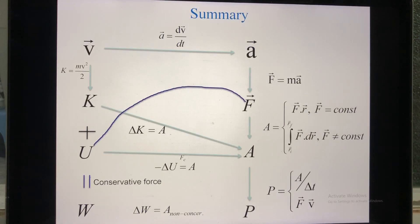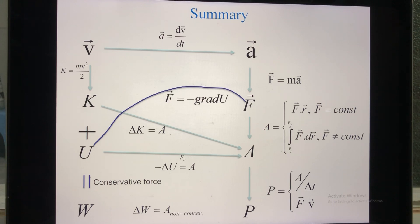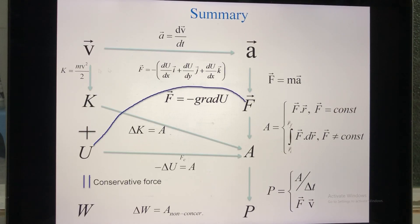In conclusion for this video: the important relationship between potential energy and force in a system containing only conservative forces is F = −grad U. In component form: FX = −dU/dX, FY = −dU/dY, and FZ = −dU/dZ. Thank you for listening.